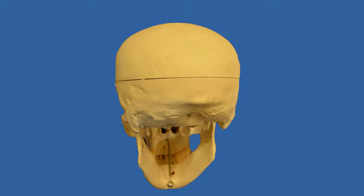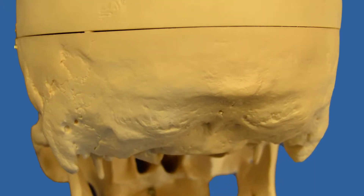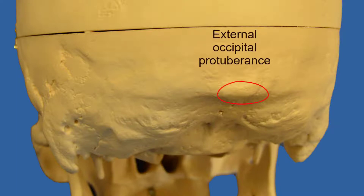This is a look at the exterior of the occipital bone. There are some features to note here. One that you can easily feel on the back of your own head is what is referred to as the external occipital protuberance. Even if you have a female skull, it's a noticeable bump that you find on the back of the skull.